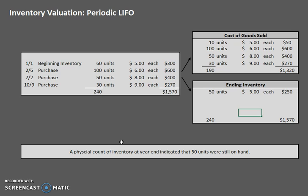Now we have one more periodic method to go over, which is the average cost method, and we are going to do that one in the next video. Please be sure to take every opportunity to keep practicing the periodic FIFO and LIFO methods. Once you really get a good grasp on those, you'll be able to move on to perpetual FIFO and LIFO. But before we move on, let's go ahead and look at average cost. In the meantime, happy studying!